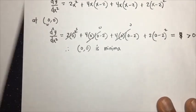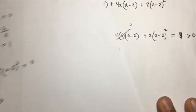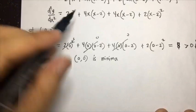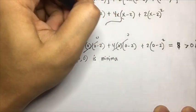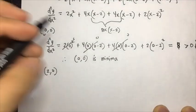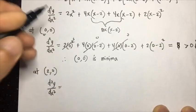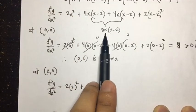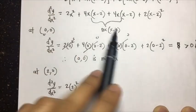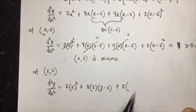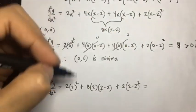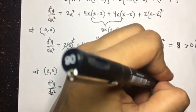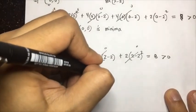Testing at x = 2: d²y/dx² = 2(2)² + 8(2)(2 - 2) + 2(2 - 2)² = 8 + 0 + 0 = 8. Since 8 is greater than zero, the point (2, 0) is also a minimum.